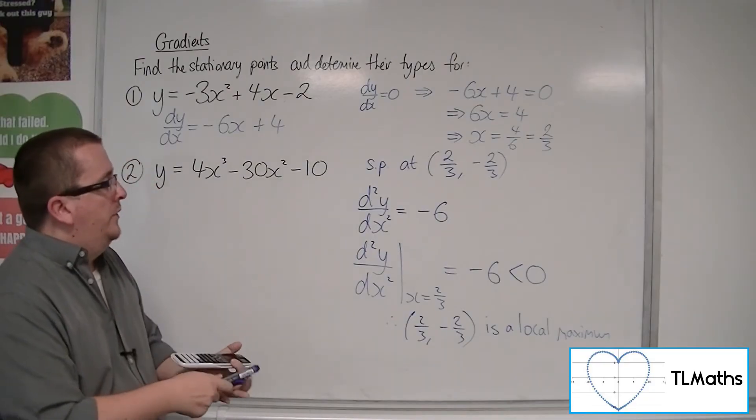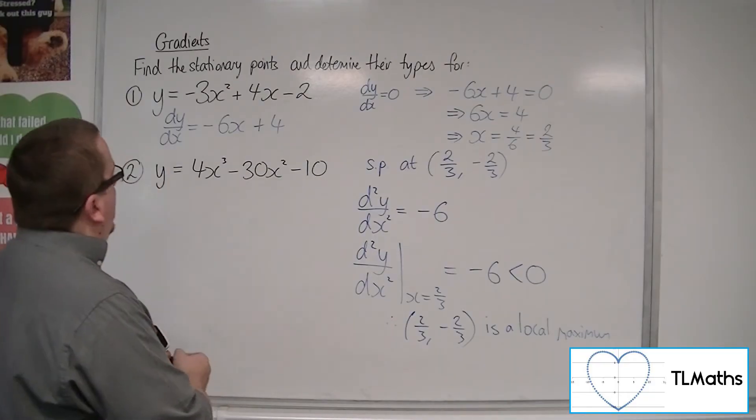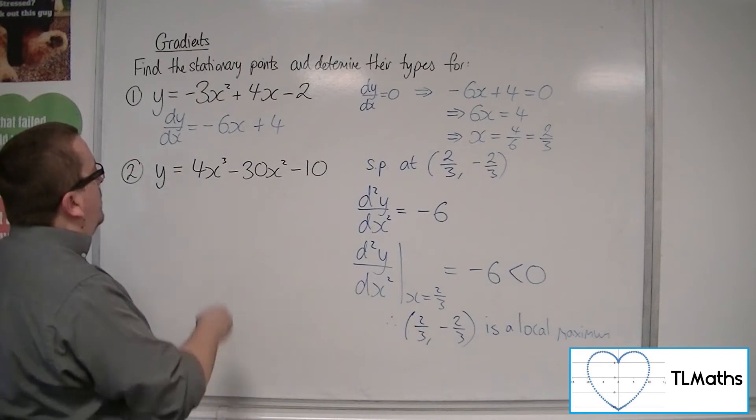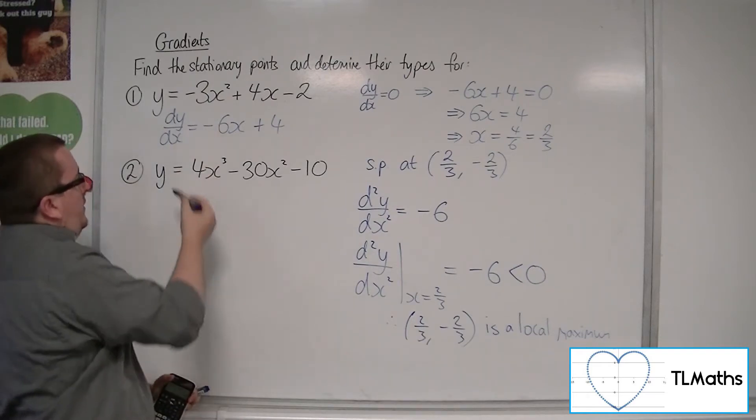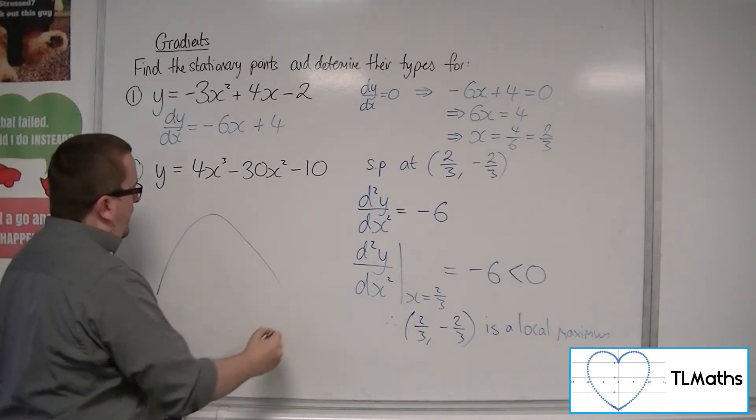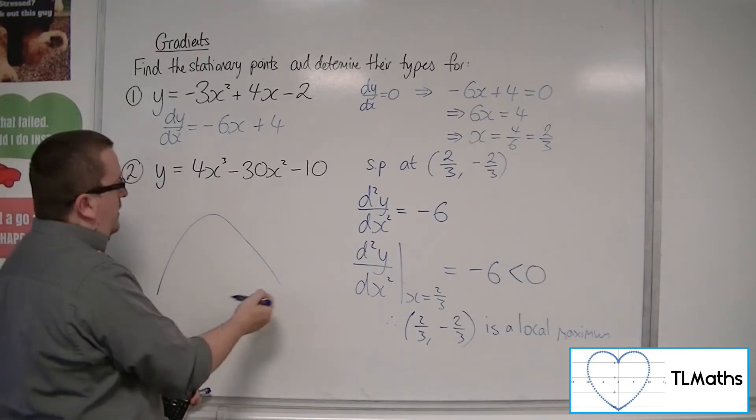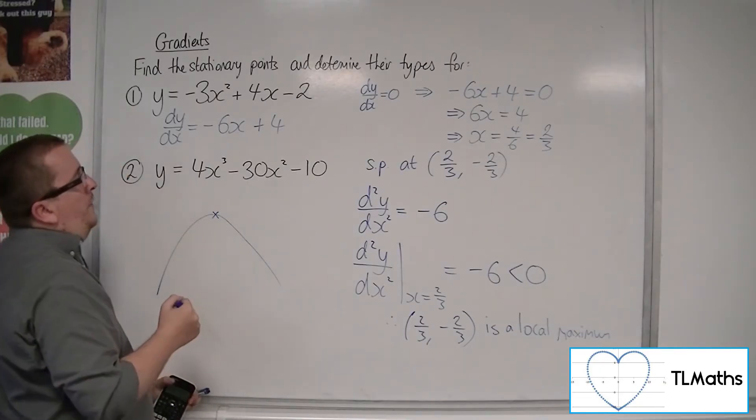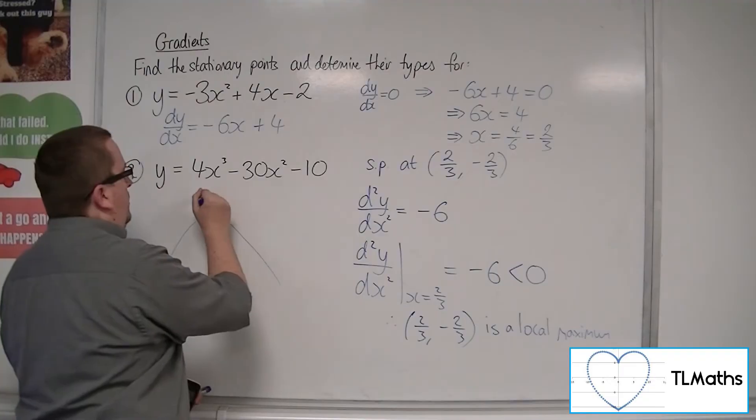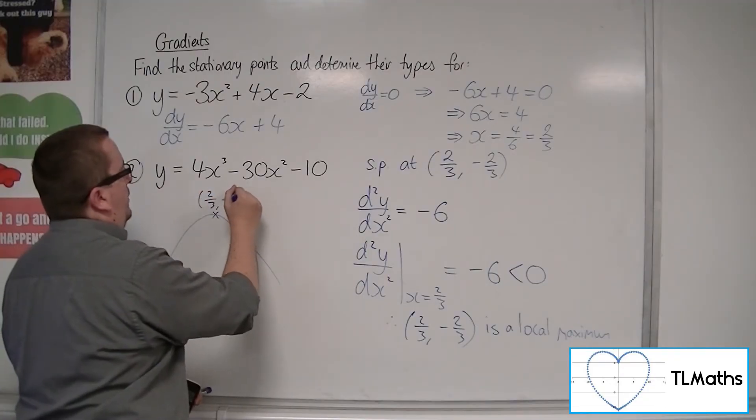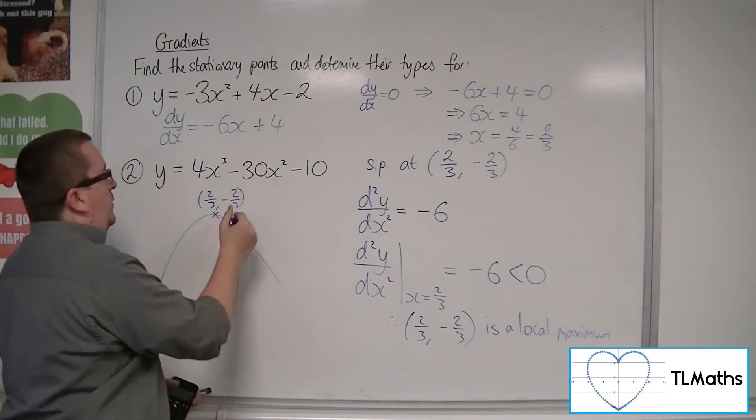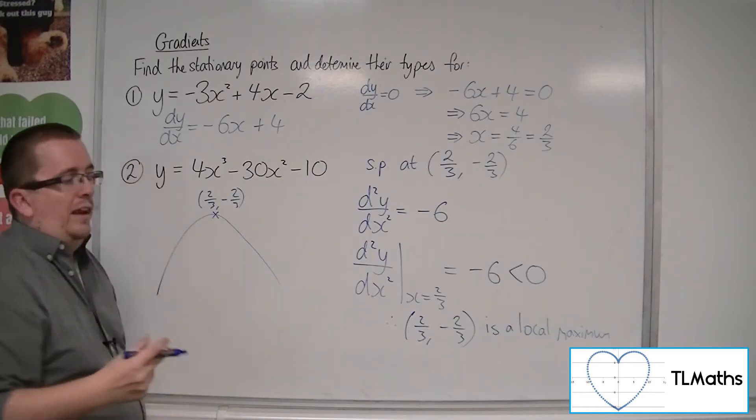So what we've got here, in fact, is a quadratic. The minus 3x squared means the curve looks like that, that kind of parabola. Its vertex is at the 2 thirds, minus 2 thirds. So clearly, this is a local maximum. In fact, it is the maximum of the curve.